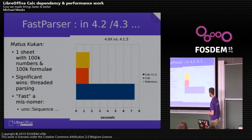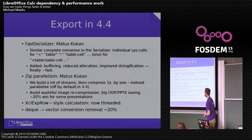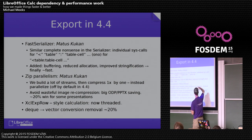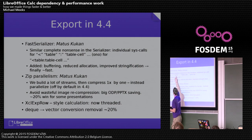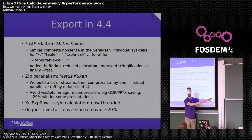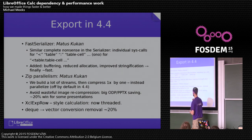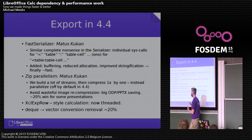In 4.4 we started to look not at load but at save. There's a thing called the fast serializer which hadn't been looked at before — and again, 'fast' is not a good sign. It turns out the fast serializer was doing an individual syscall for writing each token: one for the chevron, another for 'table', another for colon, another for 'table cell', and so on — each going into the Linux kernel to write the string. On Windows even slower — system calls are more expensive by half, if not a factor of three. With some buffering improvements, reducing allocation thrash, and better stringification, it's finally actually fast.